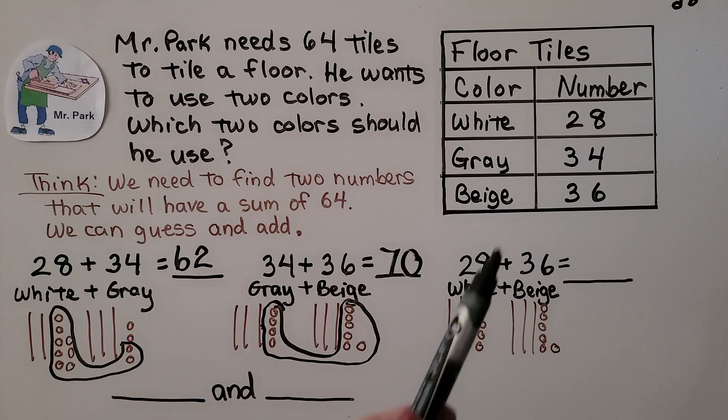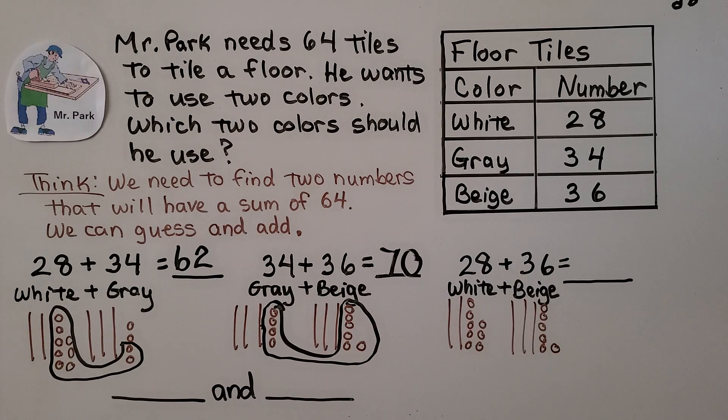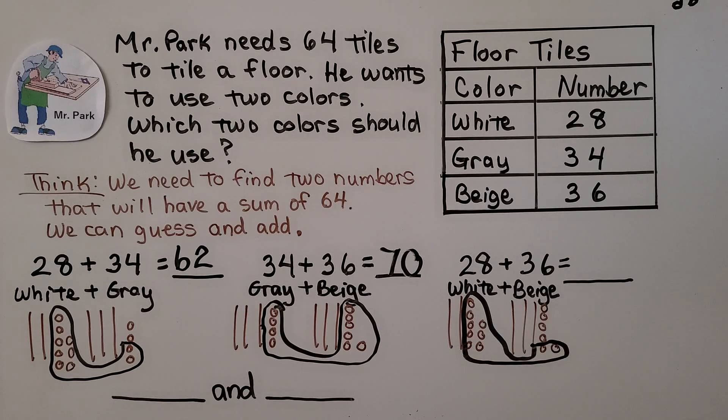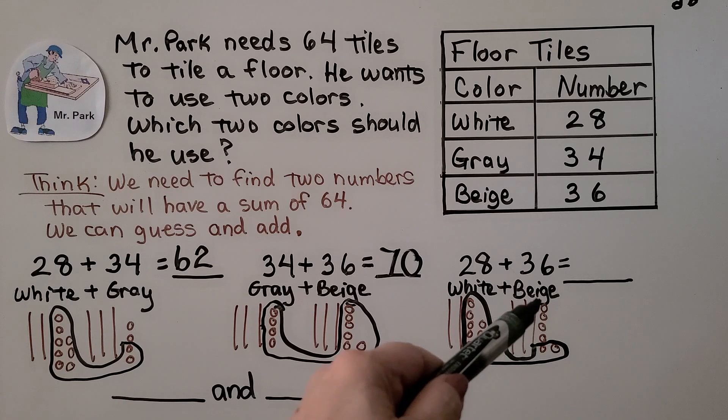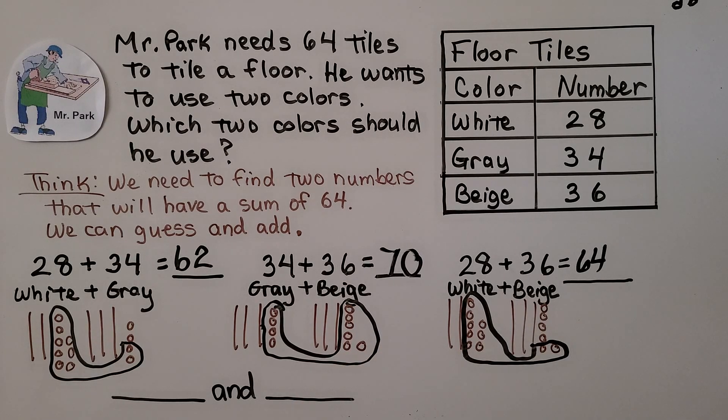What about white, which is 28, and beige, which is 36. That's two tens eight ones plus three tens six ones. We can regroup and make a ten here by taking two ones from here and giving it to the eight to make a ten. Now we've got two tens, three tens, four, five, six tens, and four ones. Six tens four ones is 64. So we know which two colors he should use. He should use white and beige. If he uses all of the white tile and all of the beige tile, he'll have 64 tiles to tile the floor.